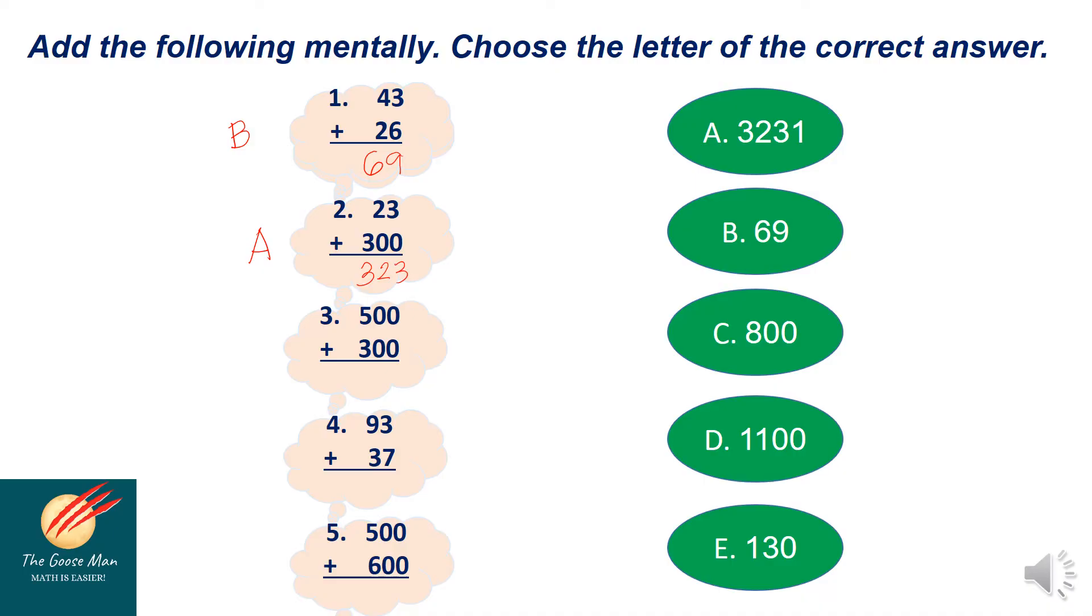Next, let's have number three. 500 plus 300. I'll add 5 and 3, which will give me 8, and just simply copy the two zeros. So the answer is 800 and this is letter C.